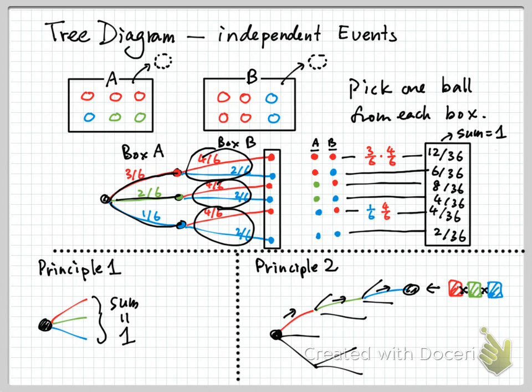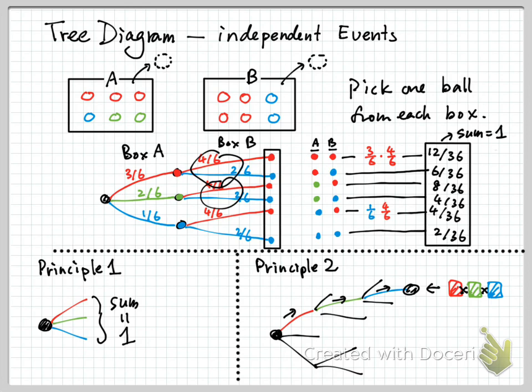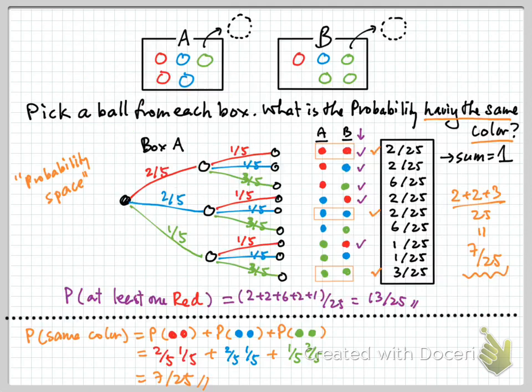It doesn't matter whether the first one is a red one, green one, or the blue one. So this is about independent events — what you pick up in box A has no effect on the probability in box B. It can be seen in the second stage: they are always the same. You just duplicate the same thing because what had happened here — red, blue, green — has no effect on the second stage.